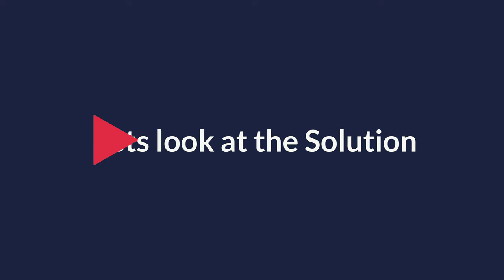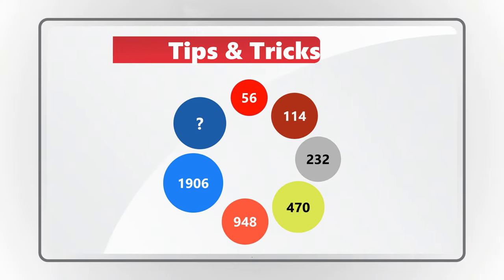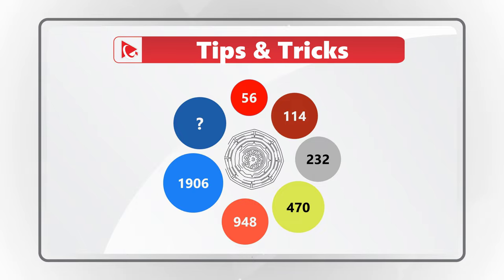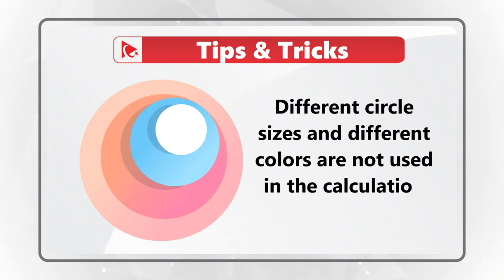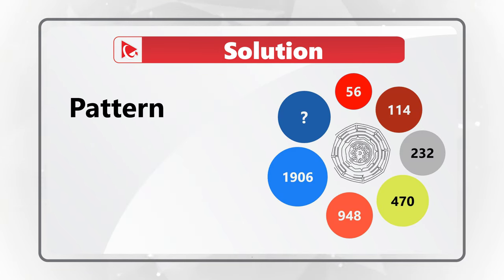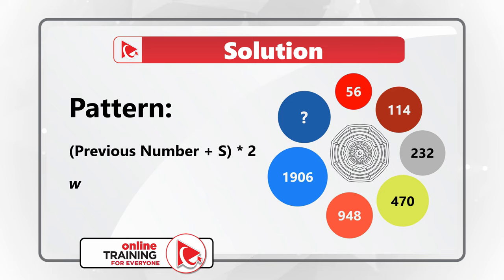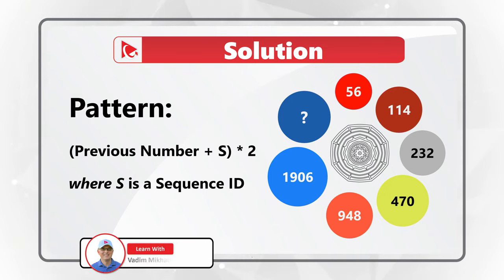As usual, what I'm sharing is just my version of the solution, so feel free to share yours in the comments. Pattern is the key to solve this challenge, and the different shape sizes and colors are introduced just to confuse you. The pattern here is: previous number plus the sequence number, then multiplied by two. You have to add the sequence number to the previous number before doing the multiplication.